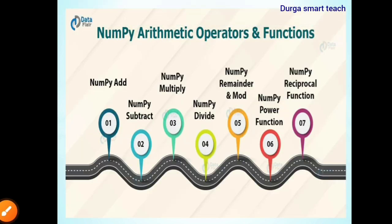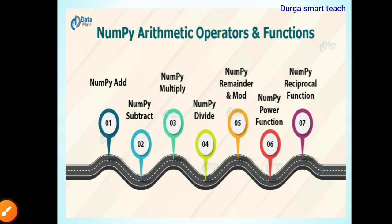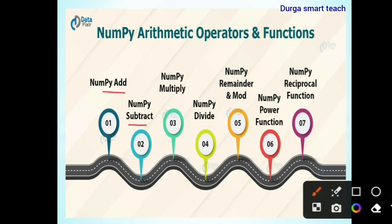The first one is NumPy add. NumPy add function is used to add two arrays. NumPy subtract is used to subtract two arrays. Multiply is used to multiply, divide is used to divide, and reminder. Next is power function and also reciprocal function. These are the seven important types of arithmetic functions: add, subtract, multiply, divide, reminder or mod, power, and reciprocal.